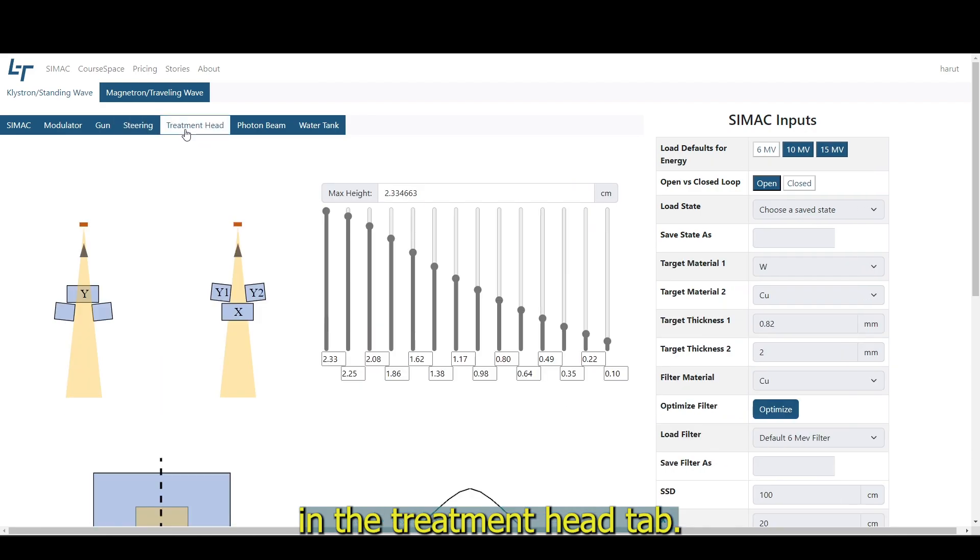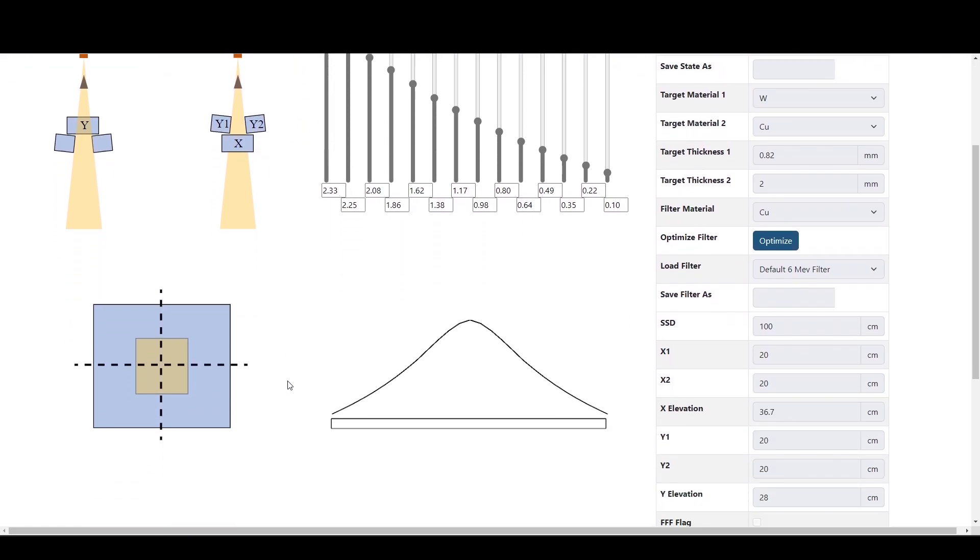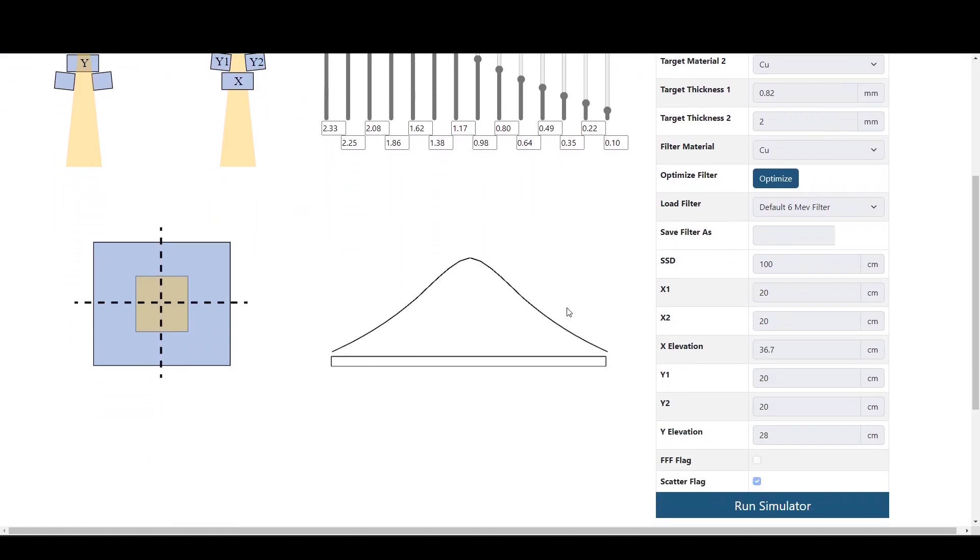In the treatment head tab, we can see the shape of the flattening filter. The field size was set at 40 centimeters.